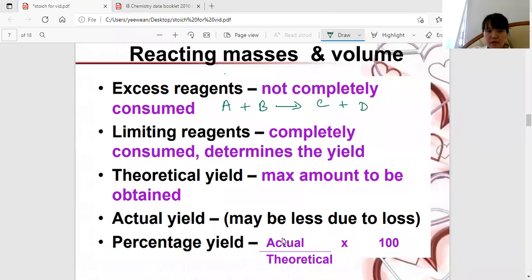Let's see what all these terms mean. Excess reagent, a reagent that is not completely consumed. So if I have A plus B to get C and D, I'm giving a very simple example here where it's 1 is to 1 is to 1 is to 1. So you have more of B. So then B is in excess. By the end of the reaction, there's extra B and all of A will be used up because I put a lot of B in. That would make A a limiting reagent, which is completely consumed.